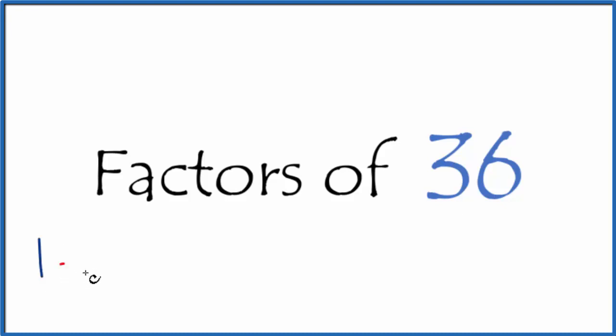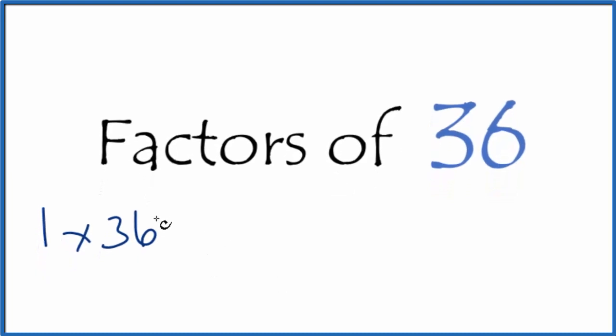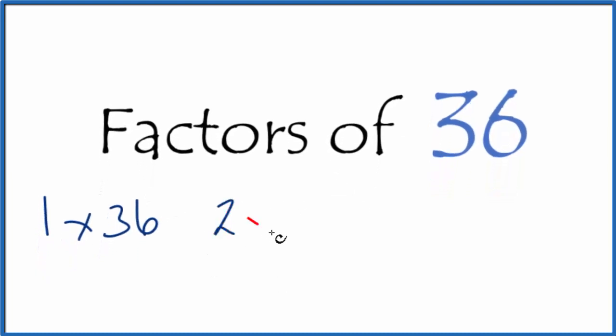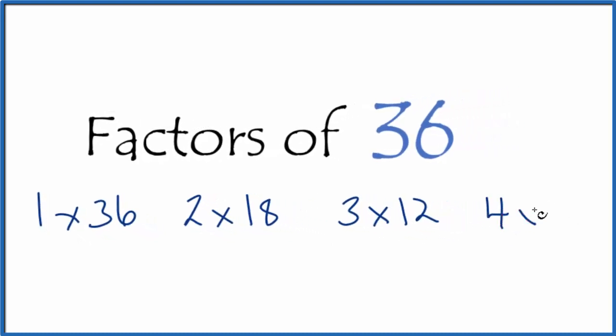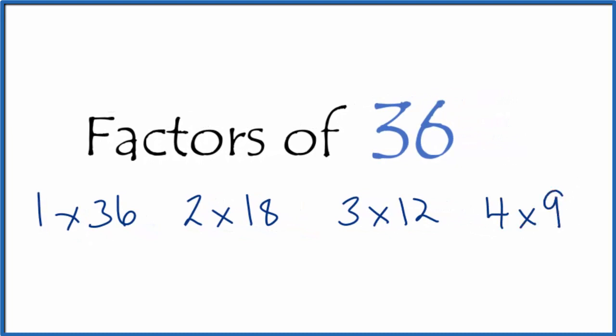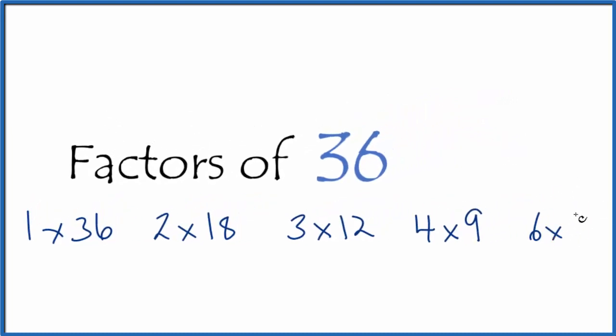So we know that 1 times 36, that's 36. And we could just keep going. 2 times 18, that equals 36. 3 times 12. 4 times 9. 5 doesn't go into 36, but 6 times 6, that does.